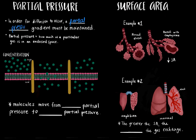The partial pressure of a gas is essentially how much of a particular gas is in an enclosed space — it's like the concentration of a gas in an area. There are different partial pressure gradients at the lungs and tissues because the partial pressures of oxygen and carbon dioxide are different in the alveoli, blood, and tissues. Molecules move from high partial pressure to low partial pressure. For example, if the concentration of molecules is higher on one side of a membrane, over time the molecules diffuse into the side where there is a lower concentration. This exact same concept applies to the diffusion of oxygen and carbon dioxide gas molecules.